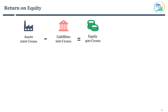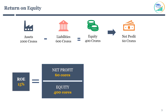Let's assume this company is generating 60 crore of net profit each year. Now it's time to calculate the return on equity. ROE is calculated as net profit divided by shareholders' equity, expressed as a percentage. In this case, ROE will be 15%. This shows the company is generating a 15% return on the money it invested.